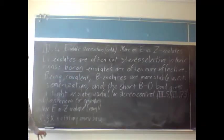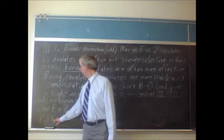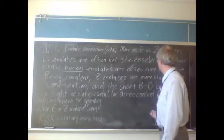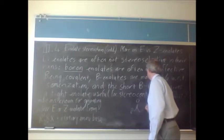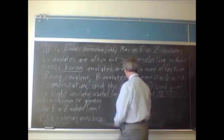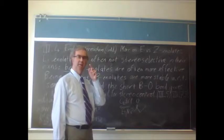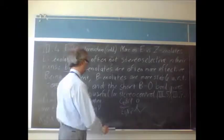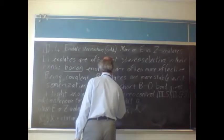So we make it from something like a dialkyl boron halide plus a tertiary amine like triethylamine. So for example, for this that we used before with the lithium, if we use a dicyclohexyl boron chloroborane, that will give us the E enolate.